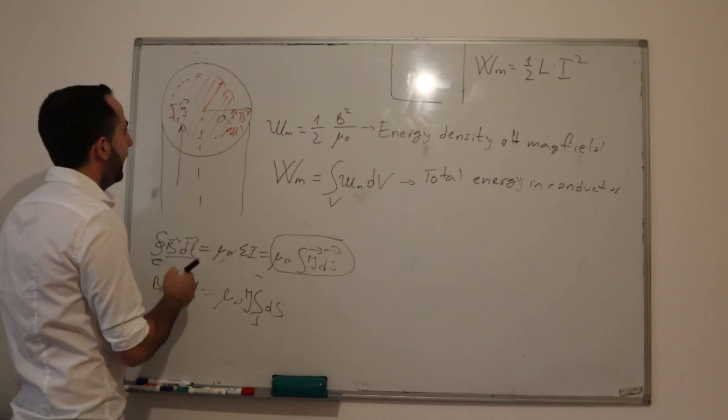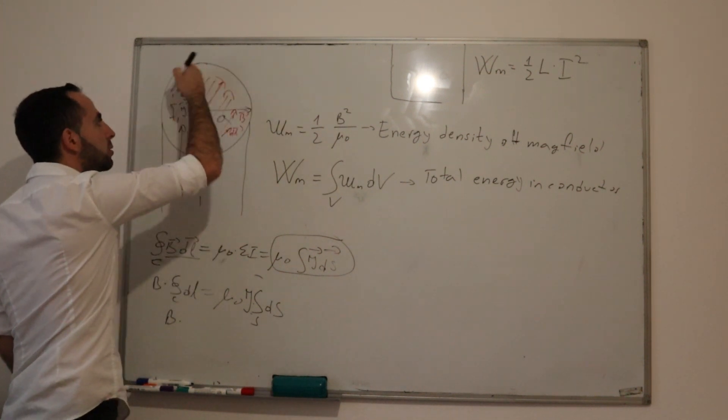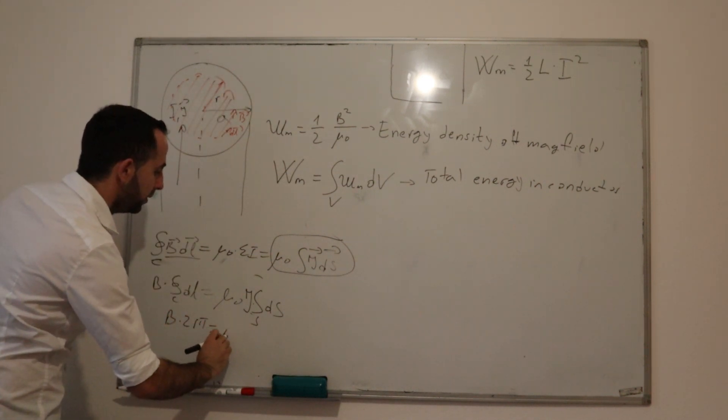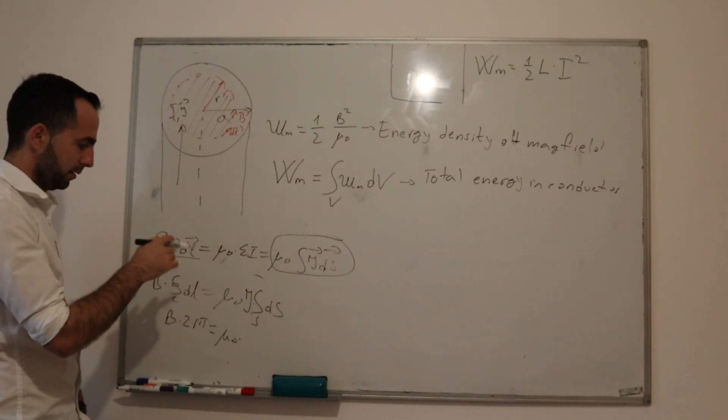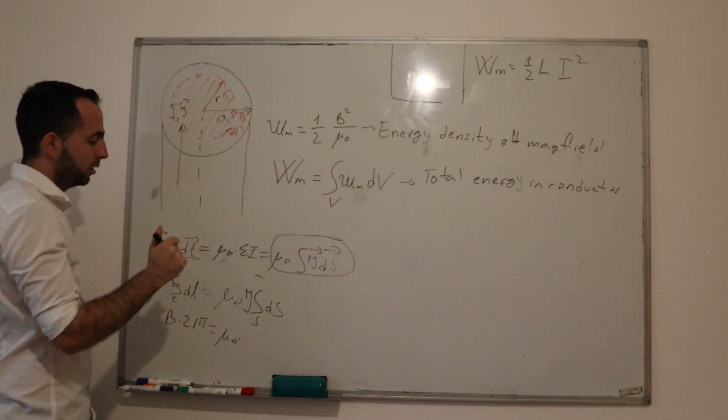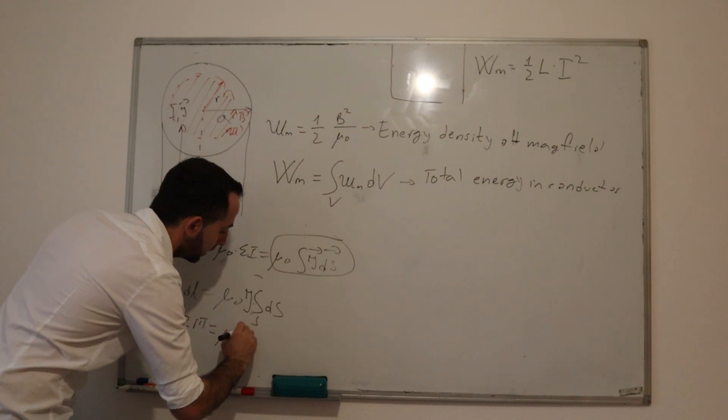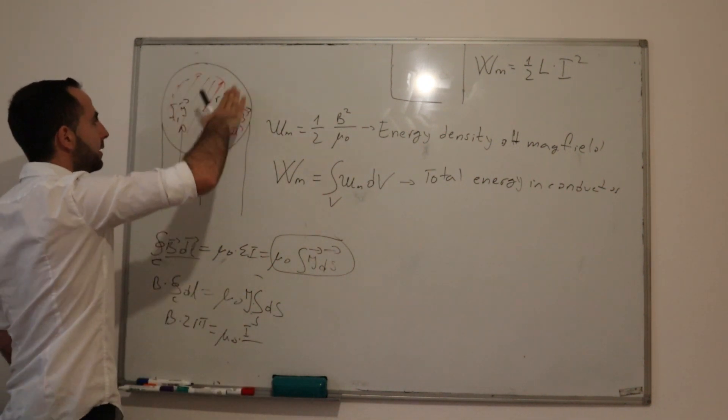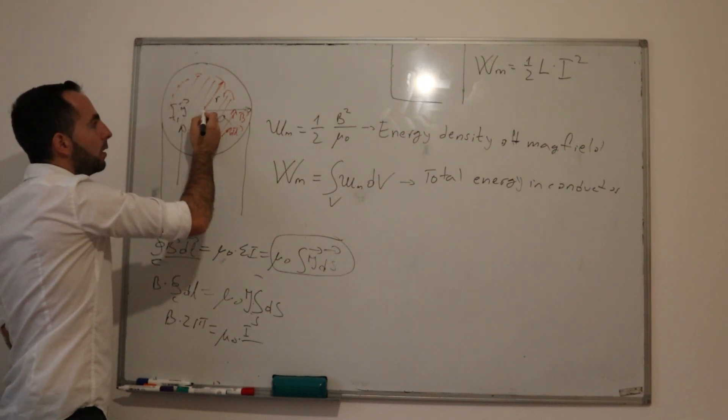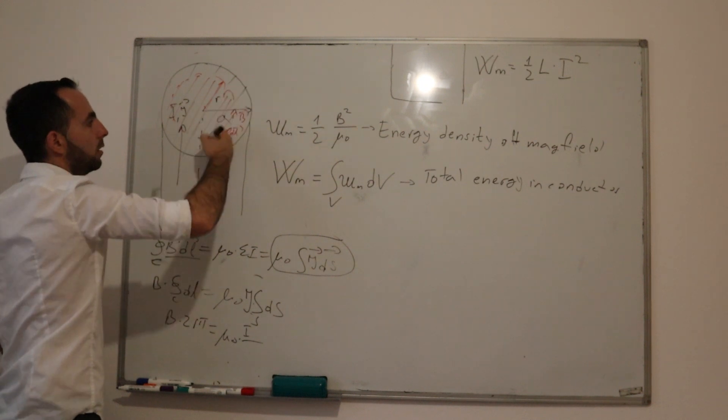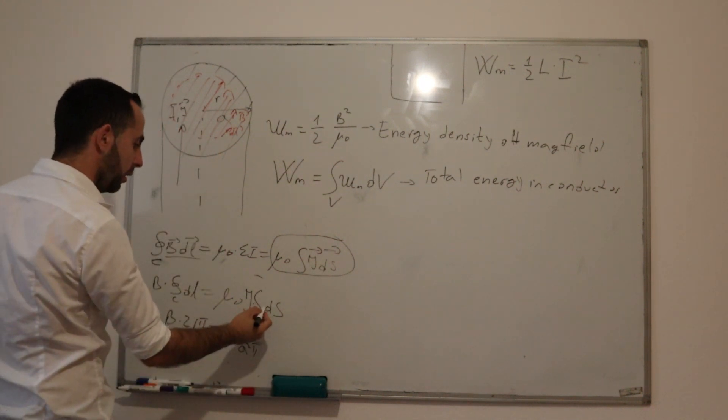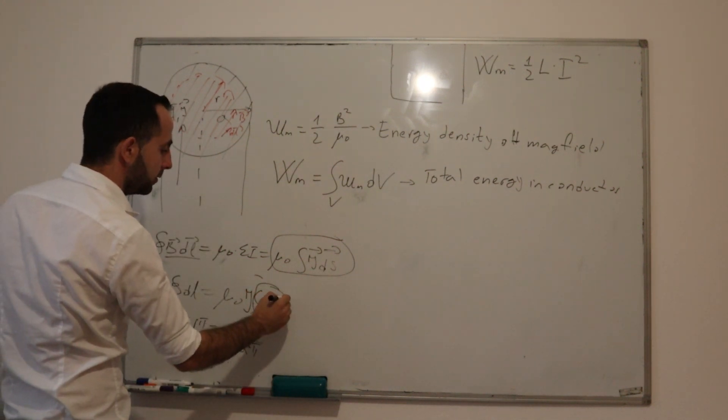Here we will get B times L, which L is the length of our closed contour, but the radius of our closed contour is R. So it is 2πR, which is equal to μ₀ times J, the current density. The current is uniform for all cross-section, so it is calculated as current divided with the total surface area of a conductor cross-section. Here, we have integral of dS.